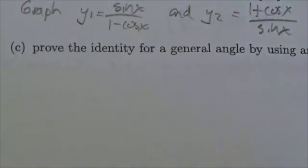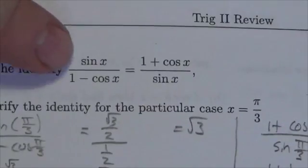Hi everyone, this is the Math 30-1 Trig-2 review and this is question 5C. We're going to prove this identity, and this is the identity up here.